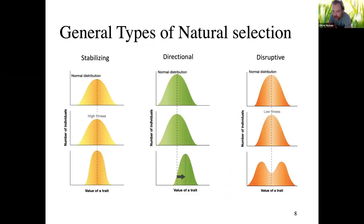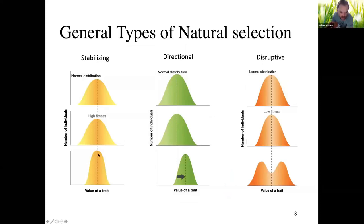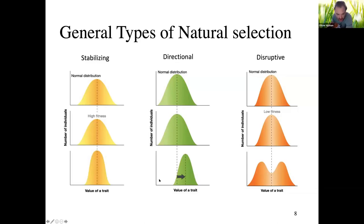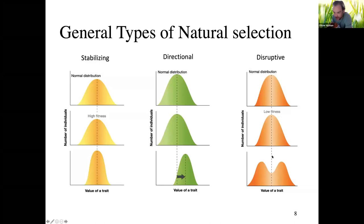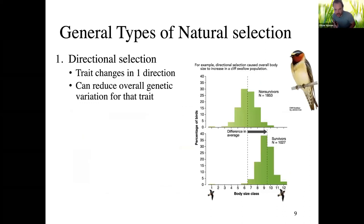In general, there are three major types of natural selection: stabilizing, directional, and disruptive. Stabilizing selection selects for the middle value of a trait, toward the average. Directional selection selects for an extreme value of a trait in one direction — for example, taller or shorter individuals. Disruptive selection selects against individuals with the median or average value of a trait and for those at extreme values. Let's look at each in a bit more detail, starting with directional selection.